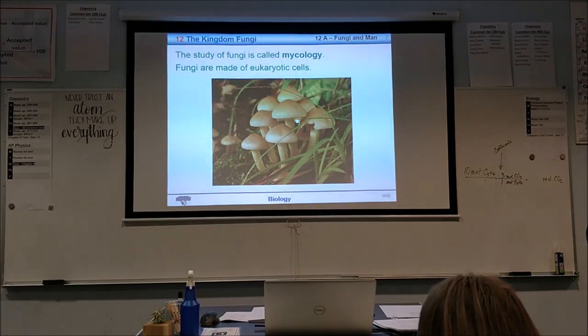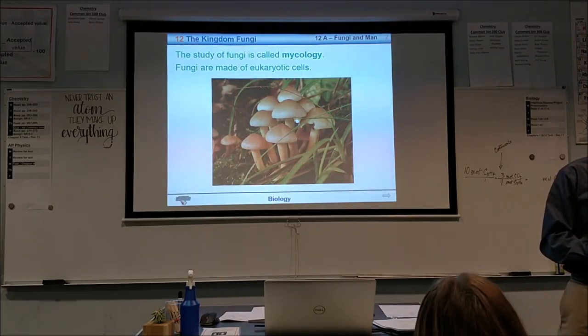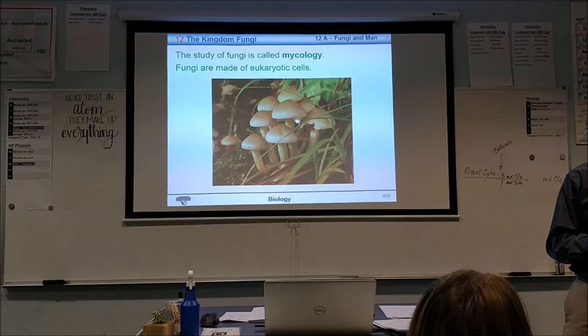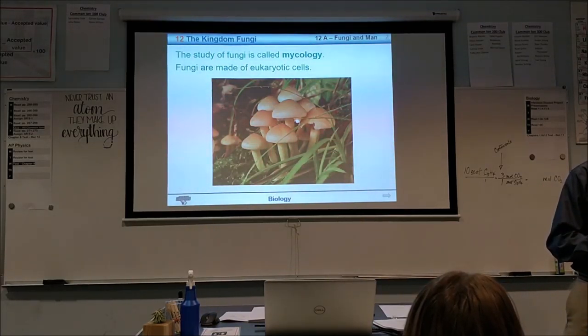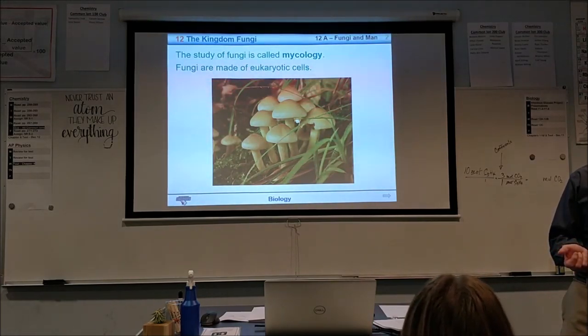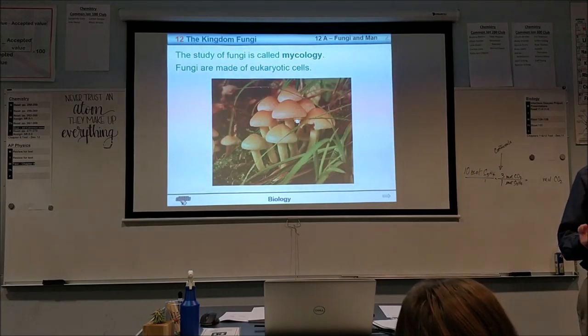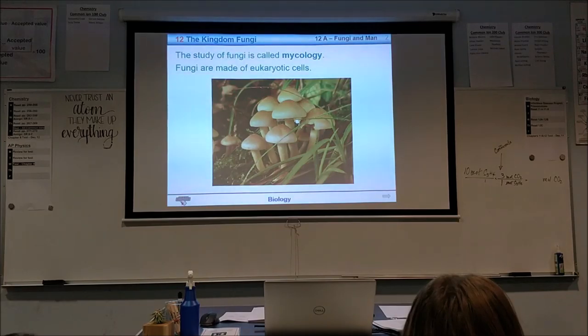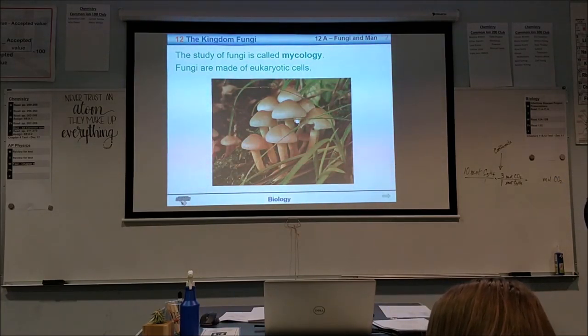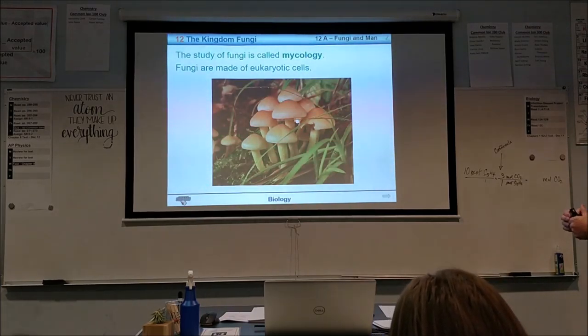Now, fungi, it says here, are eukaryotic cells. What was eukaryotic again? Eukaryotic are the ones that have membrane-bound nucleus and membrane-bound and non-membrane-bound organelles. They have their nucleus has a membrane around it, and then they have their organelles, some are bound by membrane, some are not.